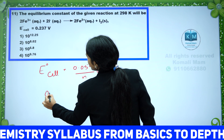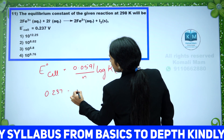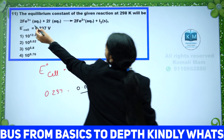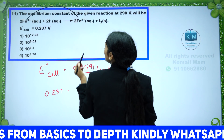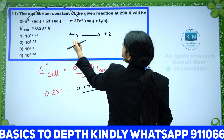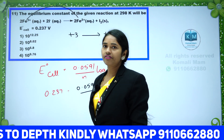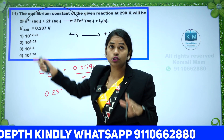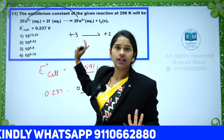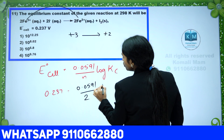Substitute E°cell = 0.237, which equals 0.0591 divided by the number of electrons transferring during the reaction. How to find N? Fe³⁺ is changing into Fe²⁺, so the change in oxidation number is 1. There are 2 Fe atoms, so the total change in oxidation state is 2. The number of electrons transferred is 2.